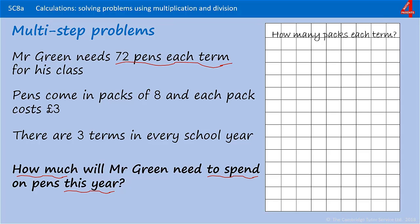So we're going to start with how many packs of pens does he need to order each term. He needs 72 pens each term and the pens come in packs of eight, so the calculation here is division: 72 divided by 8, which is 9. So he needs to order nine packs of pens each term.